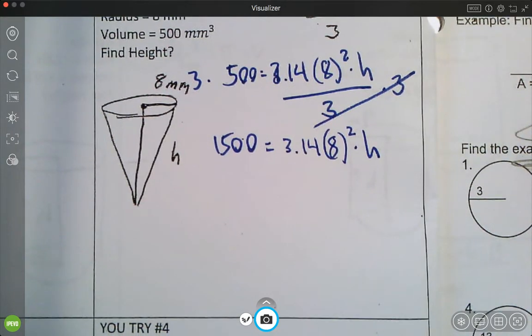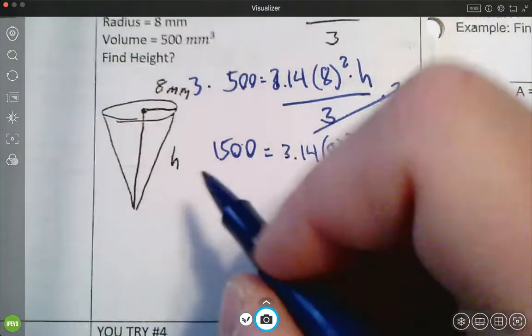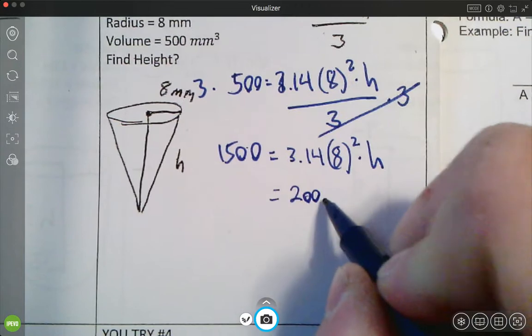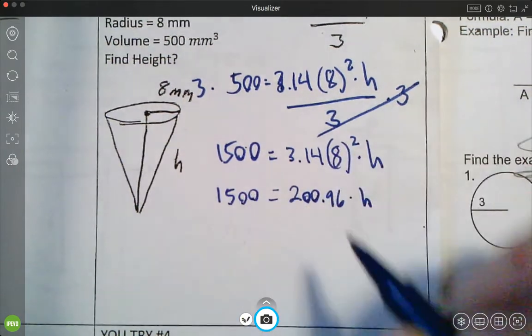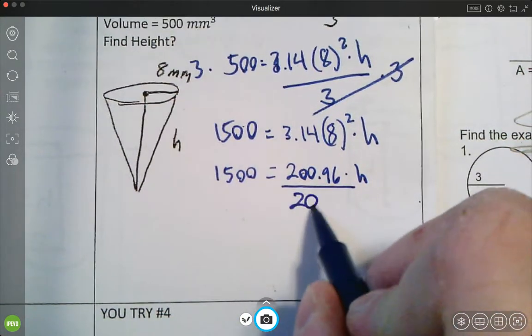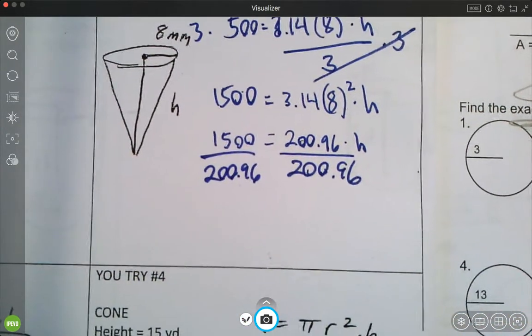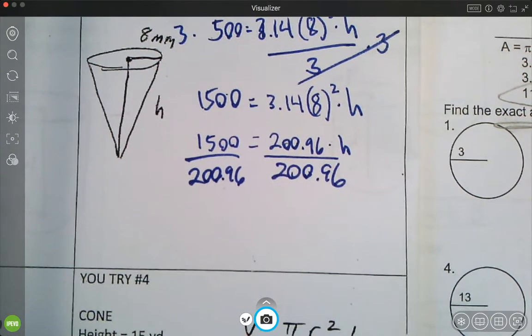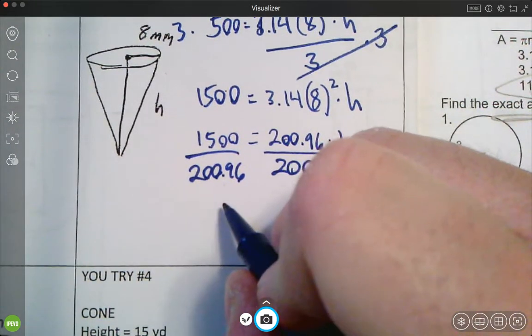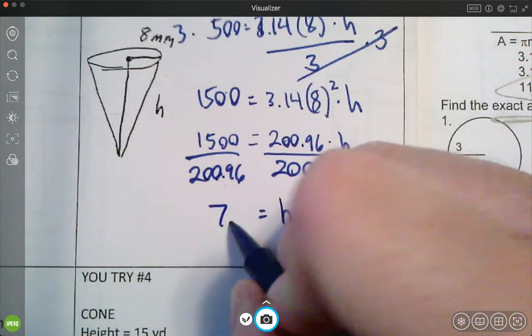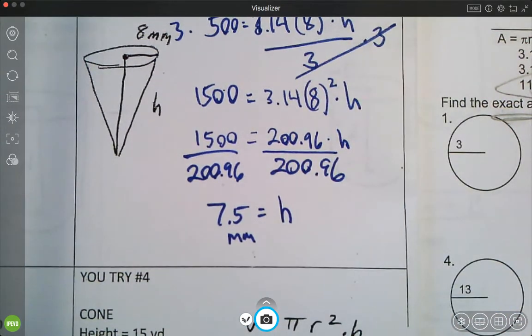You're left with 1,500 over here, and then 3.14, 8 squared times the height. Okay. So 8 squared is 64. So when I do 3.14 times 64, my calculator, I get 200.96 times H, or just H. So now I got to divide each side by 200.96. And so I'm going to get 1,500 divided by 200.96. I'm going to get about to the nearest tenth, the height would be 7.5 millimeters, it looks like, for this one.